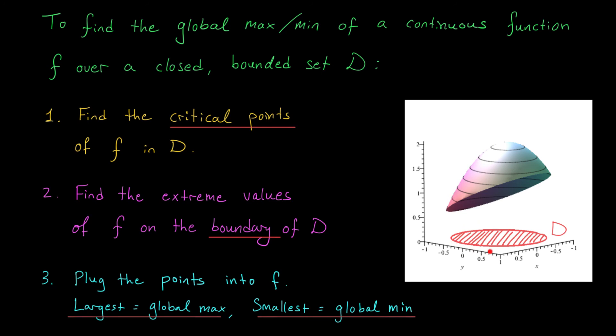Secondly, it could be the case that we have a global max or min somewhere along the boundary. You'll see in the example videos that to find these points, we restrict the equation of our function to just this boundary component and look for the biggest and smallest values there.